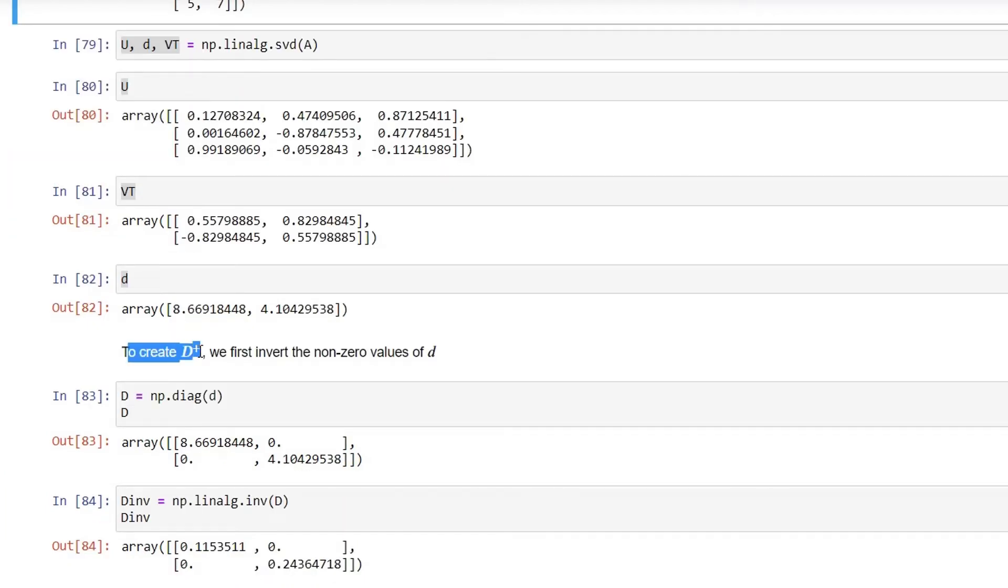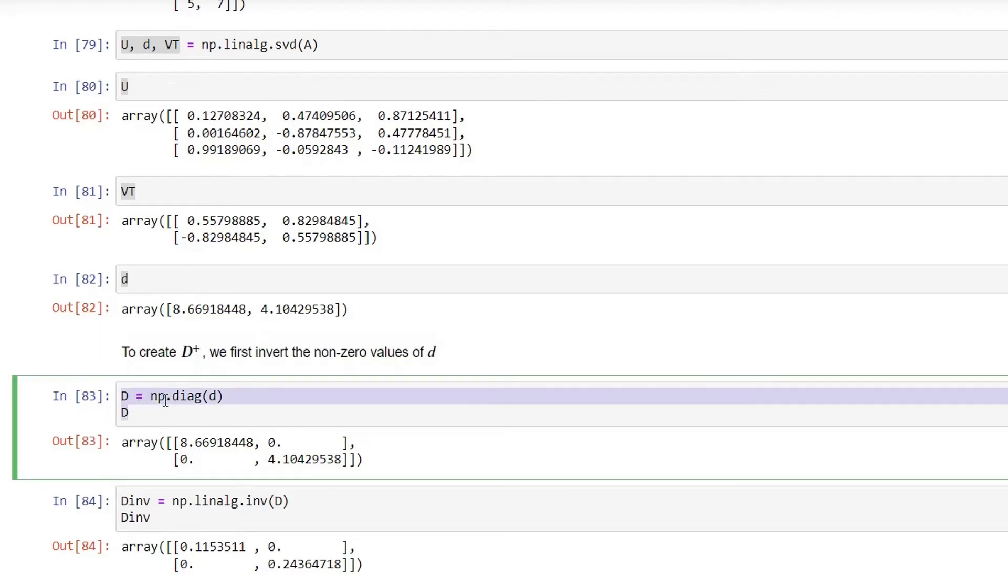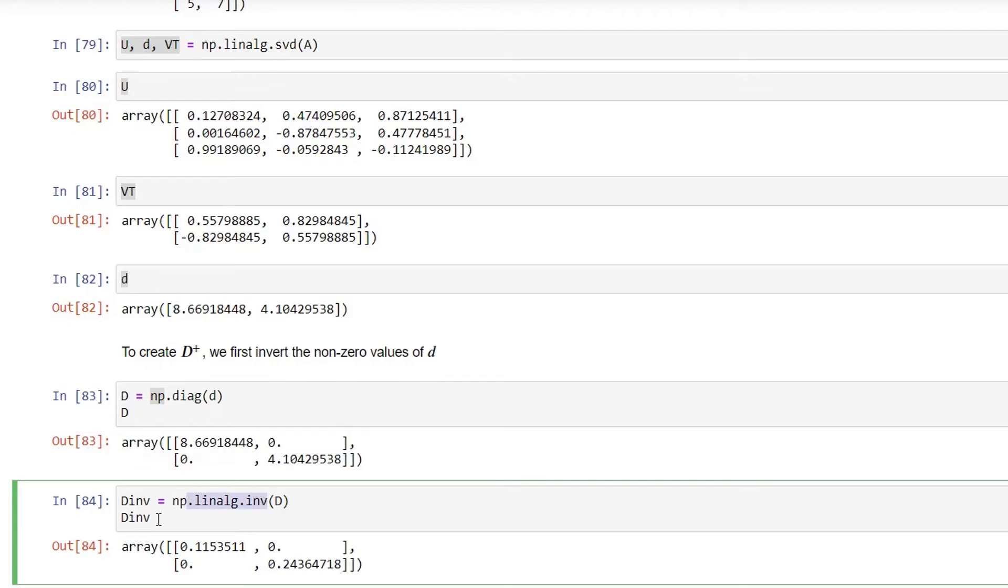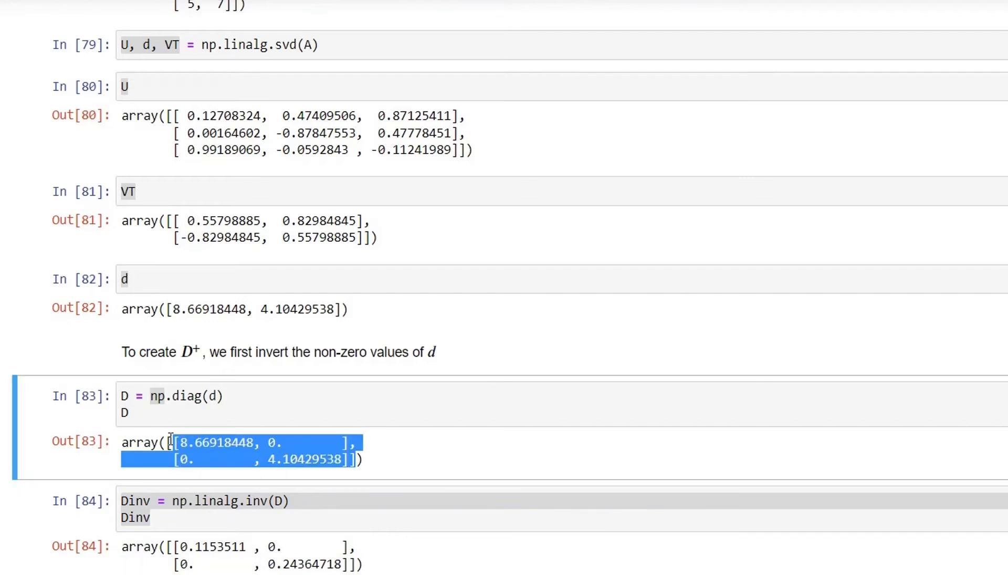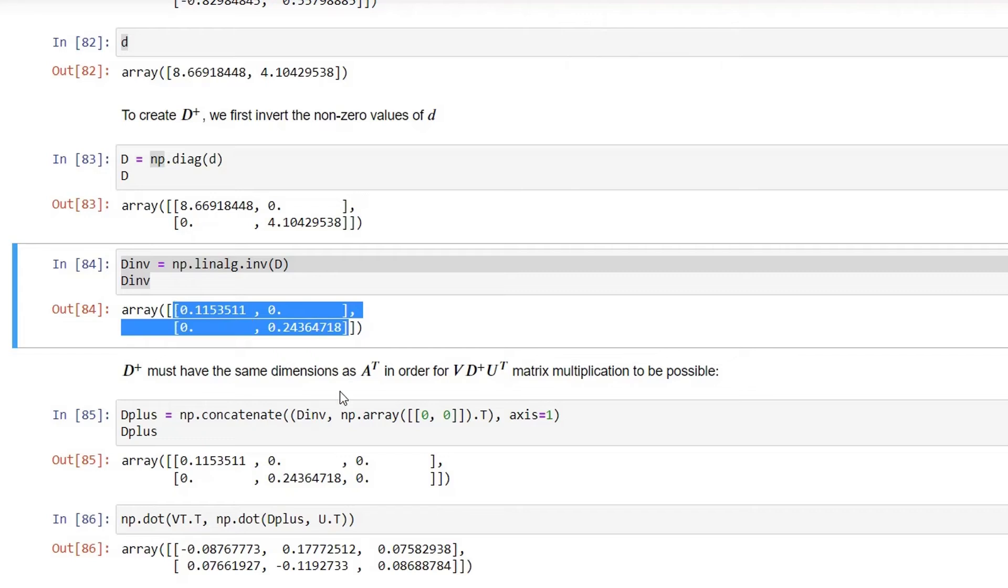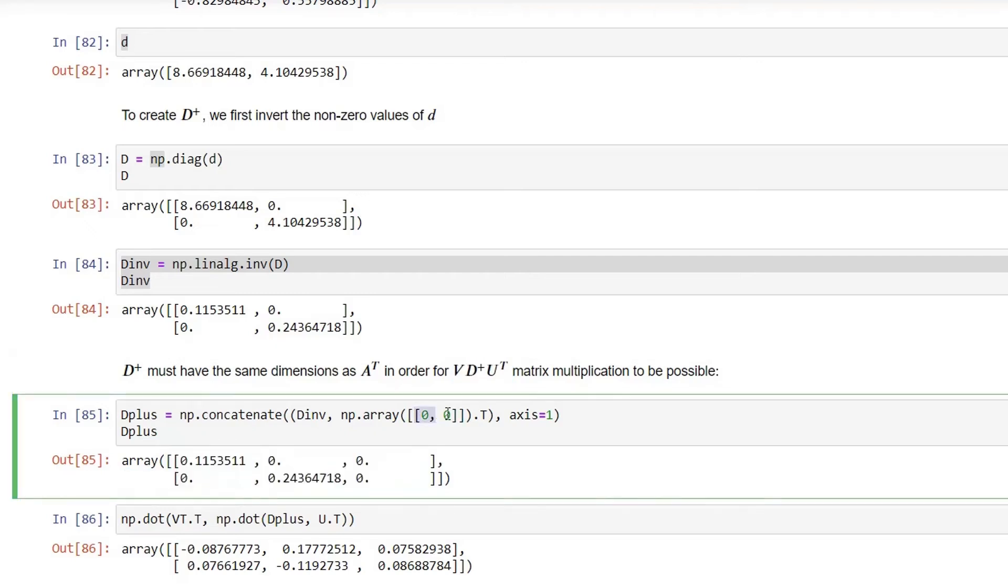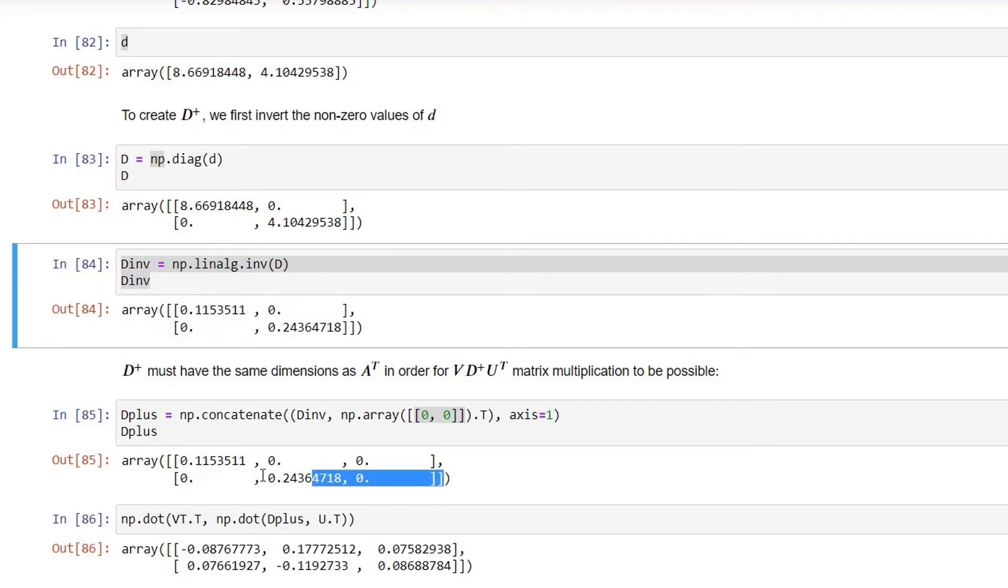So in order to calculate D plus as I said earlier we need to invert the non-zero values of D which is located diagonally on the matrix. Although you don't need to do anything manually, you can simply use this NumPy function which will create the diagonal matrix for you and then this following function will calculate the D inverse for you. So this is the inverse for this diagonal matrix on the top. Since D is a 2 by 2 matrix here, in order to make it compatible for this multiplication we are increasing the dimension or the size of this D plus matrix by adding one column to this diagonal matrix and we finally get this as an output.